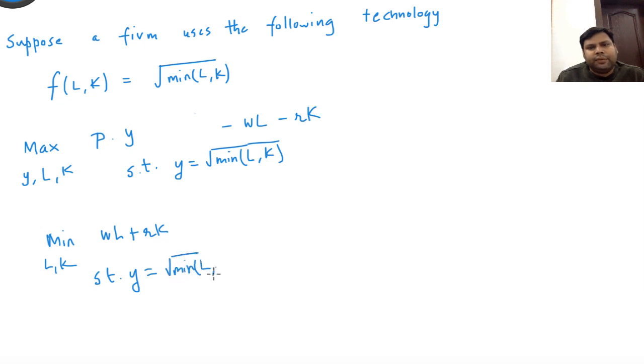Then we'll solve the profit maximization problem. How do we solve the cost minimization problem? That's simple. All that we're going to do is plot the isoquant corresponding to y level of output. This is how it's going to look.